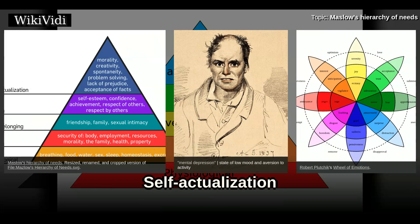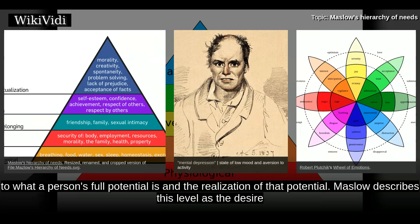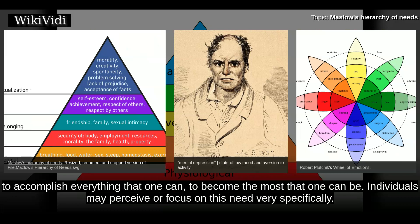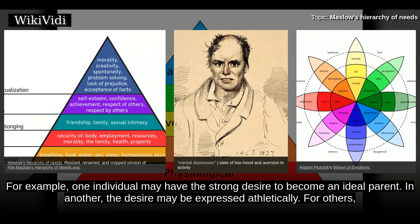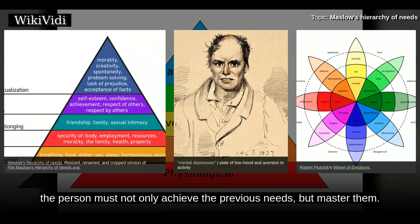Self-actualization: 'What a man can be, he must be.' This quotation forms the basis of the perceived need for self-actualization. This level of need refers to a person's full potential and the realization of that potential. Maslow describes this as the desire to accomplish everything that one can — to become the most that one can be. Individuals may focus on this need very specifically: one individual may desire to become an ideal parent, another may express it athletically, and for others it may be expressed in paintings, pictures, or inventions. Maslow believed that to understand this level of need, the person must not only achieve the previous needs but master them.